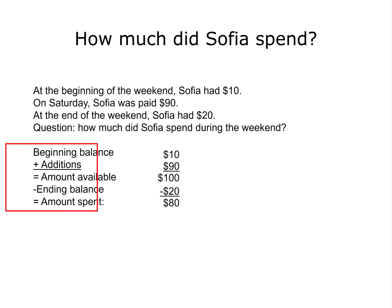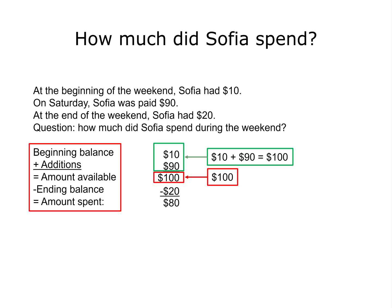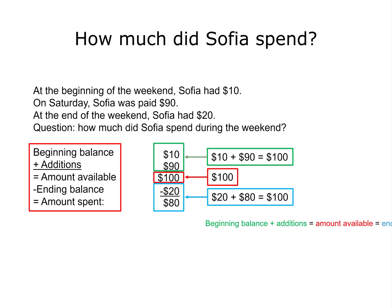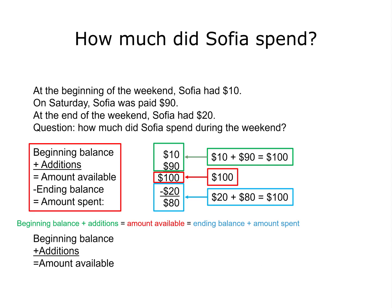Notice something important about this formula. The beginning balance plus additions — which is $100 total — equals the amount available, which also equals the ending balance plus the amount spent, totaling $100. The version of this formula we'll use most is: beginning balance plus additions equals the amount available, then we subtract the ending balance, which gives us either the amount spent, amount used, amount transferred out, or amount sold.